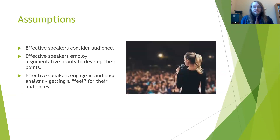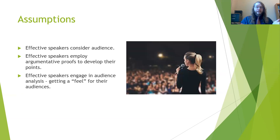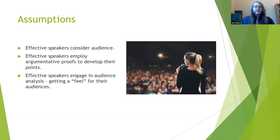Rhetoric takes on a few different assumptions about how we communicate. One of them is that effective speakers consider audience — they conduct an audience analysis where they figure out just whom they're addressing. For example, speaking to a group of high school students versus speaking to members of an elderly community are going to be very different in terms of the references, style, and rhetorical appeals that you might make. Another idea here is that of argumentative proofs, which are used to support and substantiate an argument. A stand-up comedian, for instance, will use jokes and references to the audience and their location as a way to help build their argument.